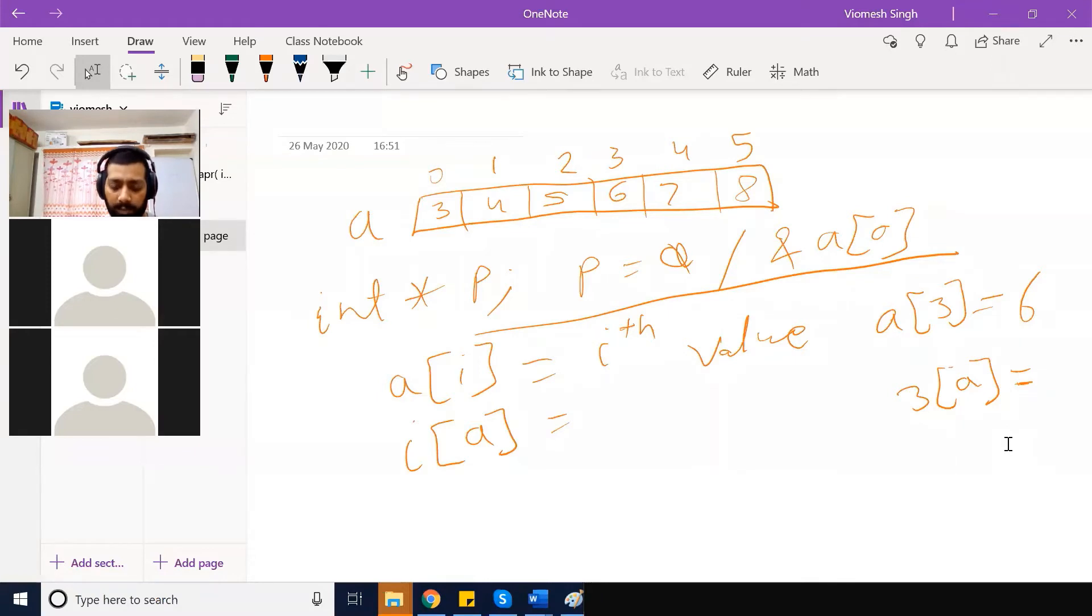It will be 6. Who will call it? Ankita. Ankita, you have attended my class? Yes, sir. That's right. 3 of a is also 6.